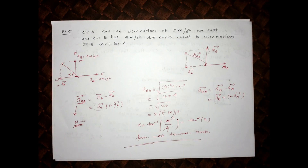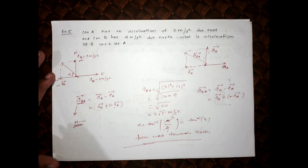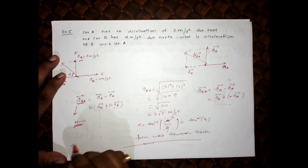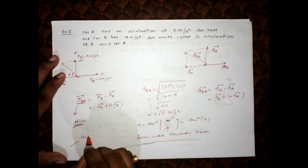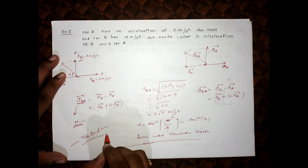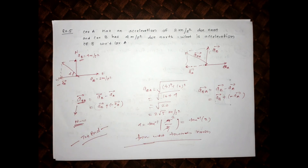We have already solved all these examples, which were fairly easy since this is the first part of the relative motion lecture — lecture 7b — where I explained the theory. In the next part, we will increase the level and look at more interesting problems. Thank you very much, all of you.